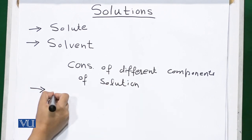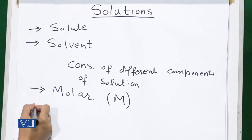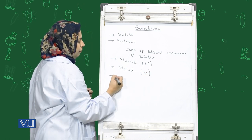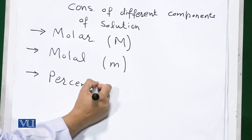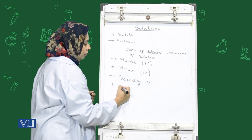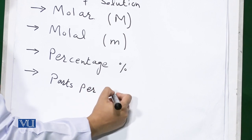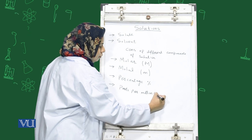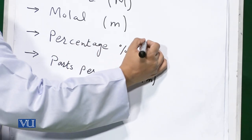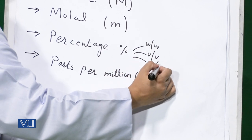Based on the concentration of the solute, we have various types. For example, molar solution which is represented by capital M, molal solution which is denoted by small m, percentage solution, and parts solution. They can be parts per million, parts per billion, but we will only talk about parts per million which is denoted by PPM. Further, percentage solutions can be divided into weight by volume, weight by weight, volume by volume, and weight by volume.